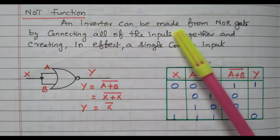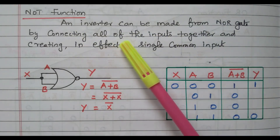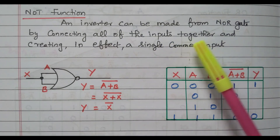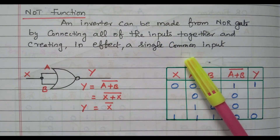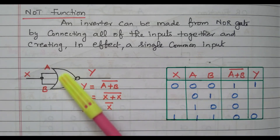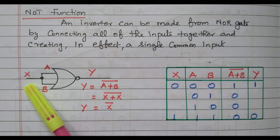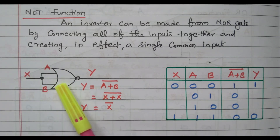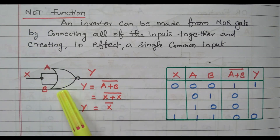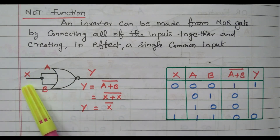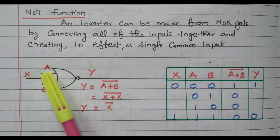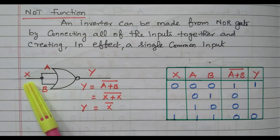An inverter can be made from a NOR gate by connecting all of the inputs together, creating in effect a single common input. So in a NOR gate, both the inputs are connected together with a single common input. The input is X, so A is also X and B is also X — both are connected together — and the output is Y.